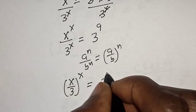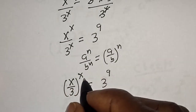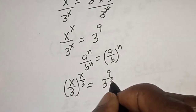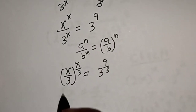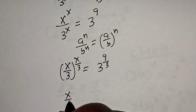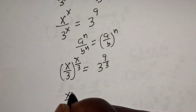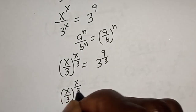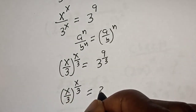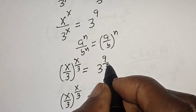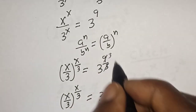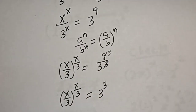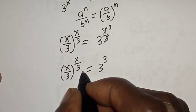Now let's divide the power by 3: so this is s over 3 to the power of s over 3, is equal to 3 to the power of 3. We rewrite 3^9 as 3^3 repeated three times, giving us 3 to the power of 3.